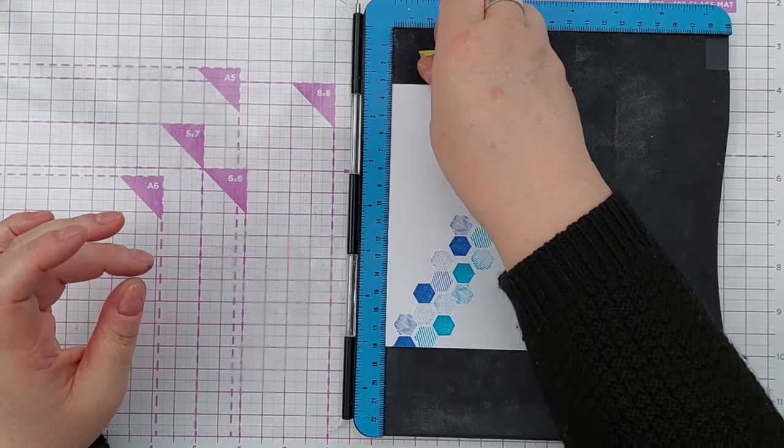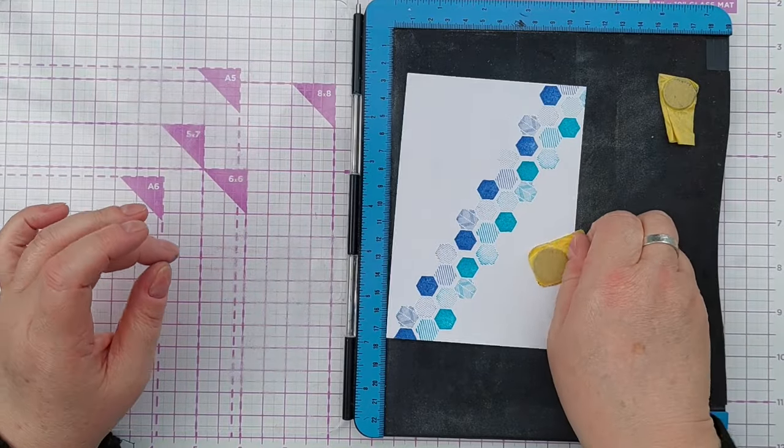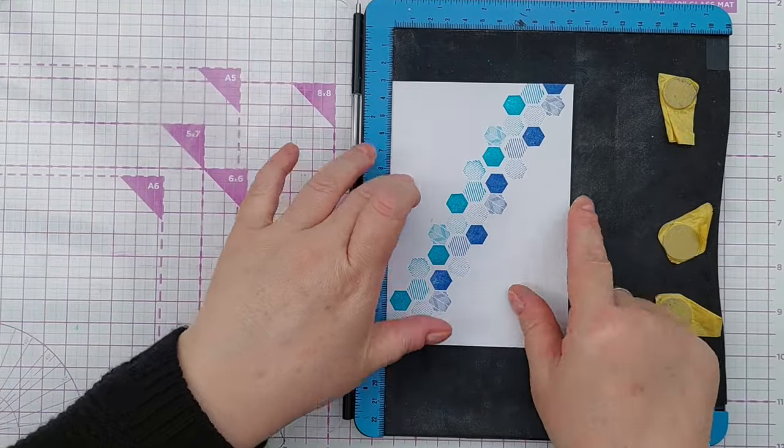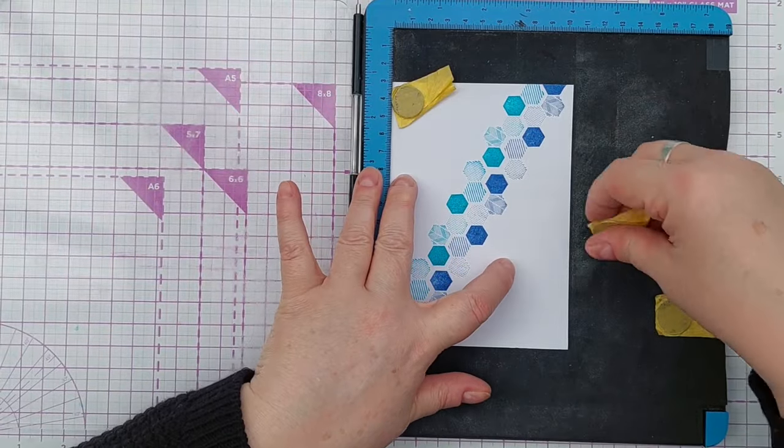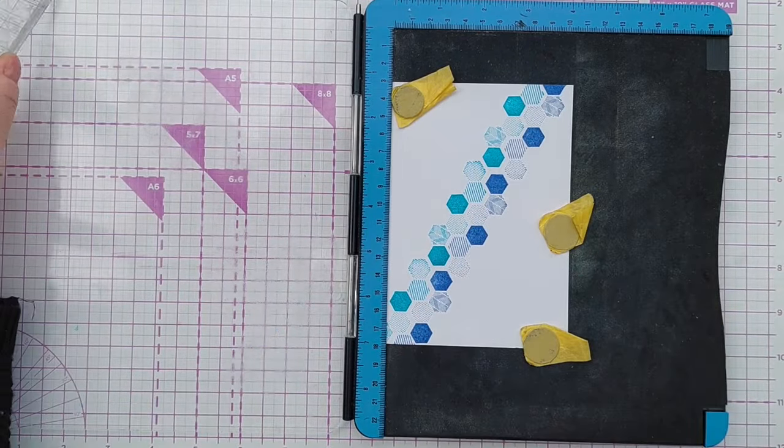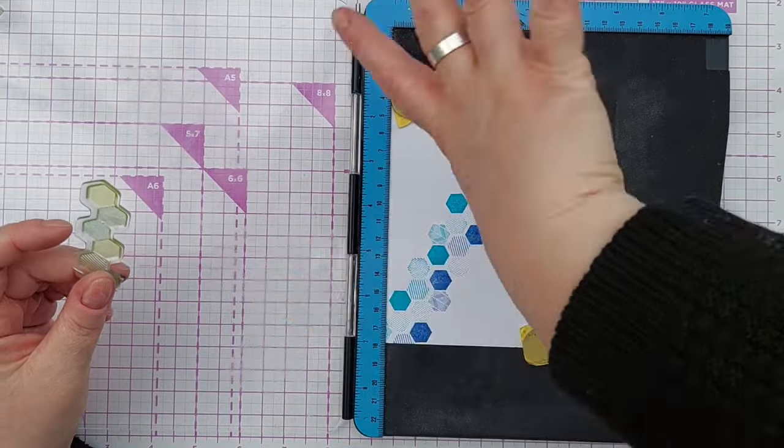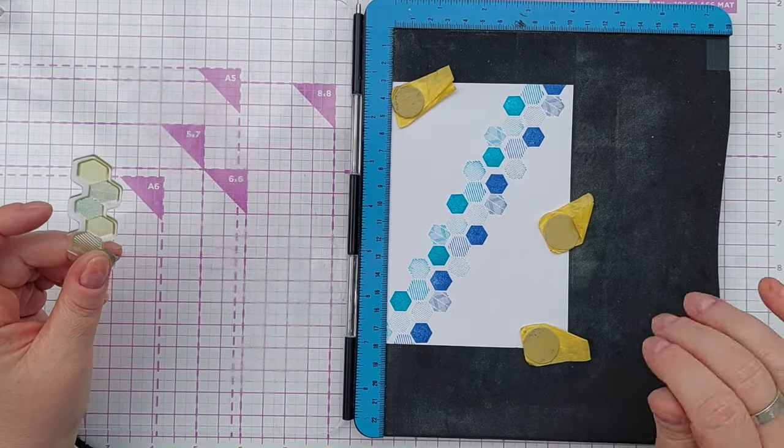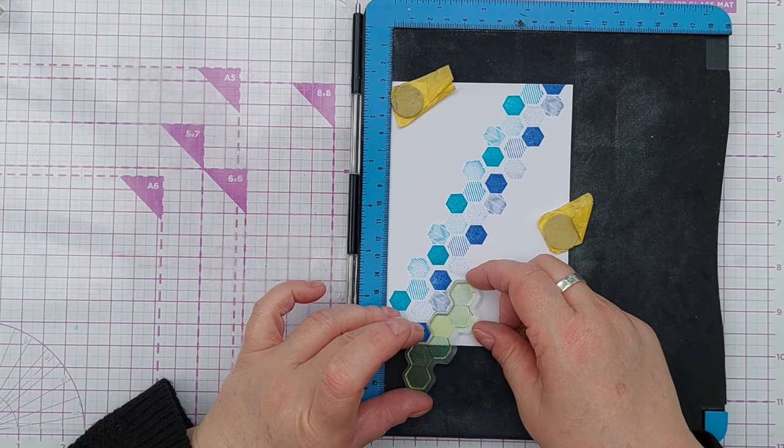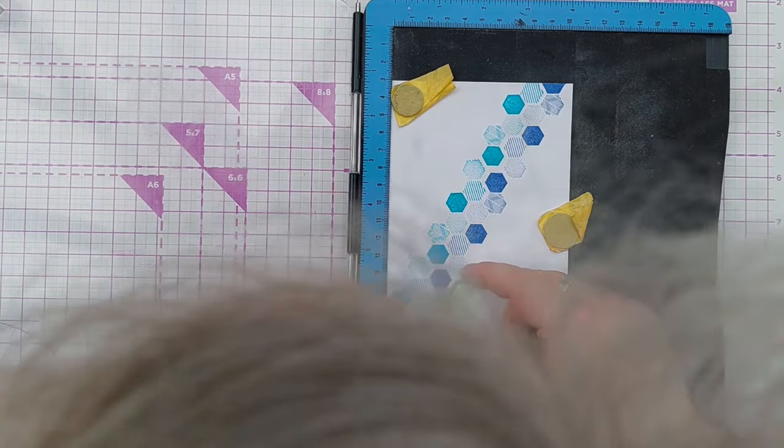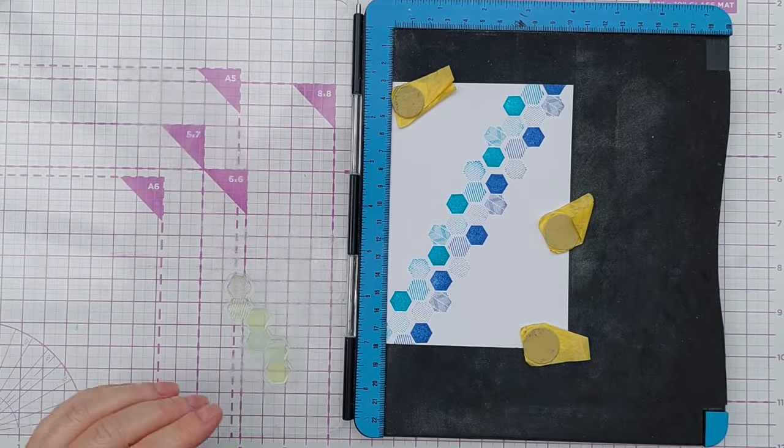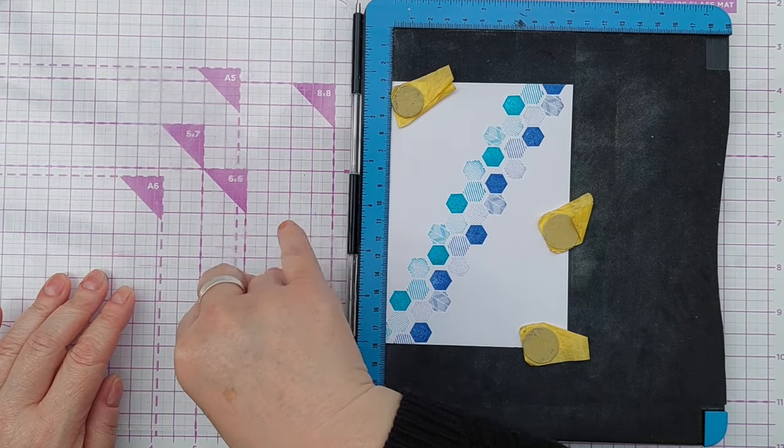But if you've only got an acrylic block you can definitely still do this kind of pattern. So now I'm just going to put another row here and I flipped my paper around so I can just keep this aligned to the left and I think I'll just pop that there. So that's in place, it's still sticky and I can just get on and do the third row.